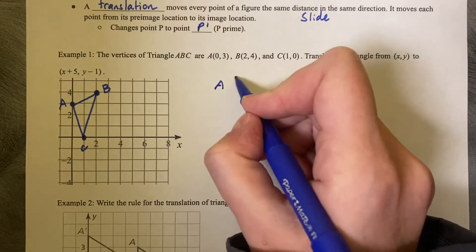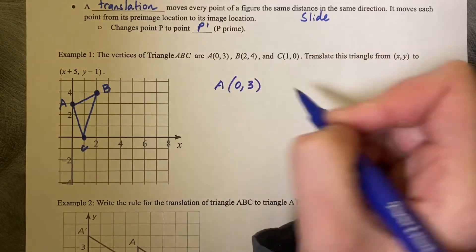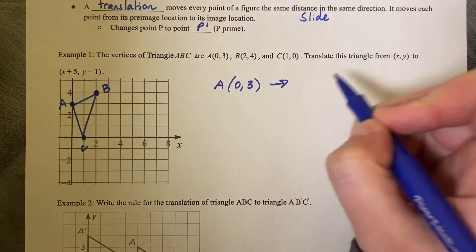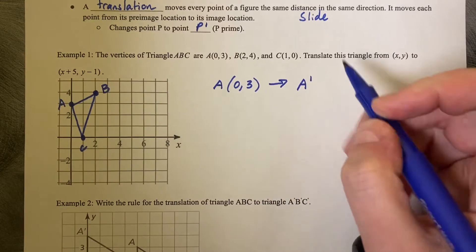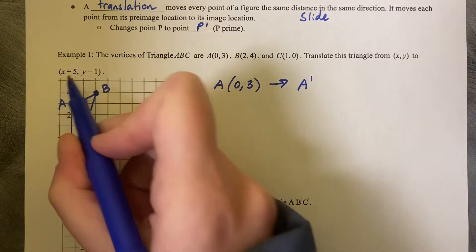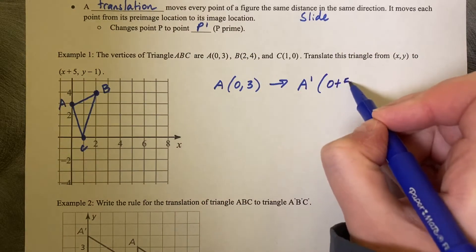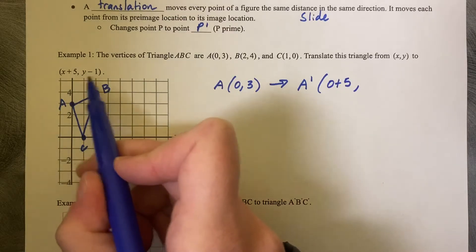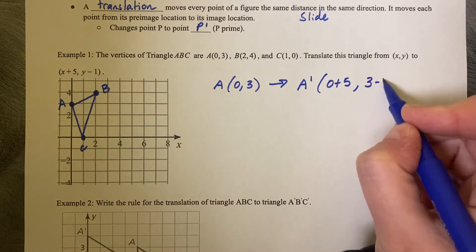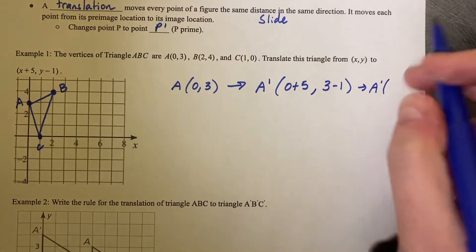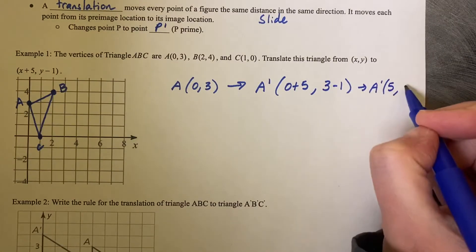So if we take A (0,3) and we want to translate it, we're going to become A prime, and you're going to take each X value and add 5. So in this case, it's going to be 0 plus 5, and then 3 minus 1, which is going to give us an A prime at (5,2).